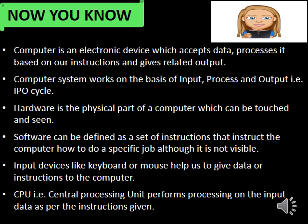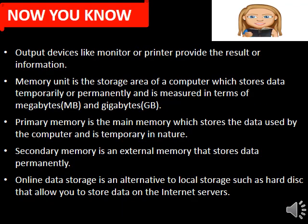Fifth, input devices like keyboard or mouse help us to give data or instructions to the computer. Sixth, CPU — central processing unit — performs processing on the input data as per the instructions given. Seventh, output devices like monitor or printer provide the result or information. Eighth, the memory unit is the storage area of a computer which stores data temporarily or permanently and is measured in terms of megabytes (MB) and gigabytes (GB).